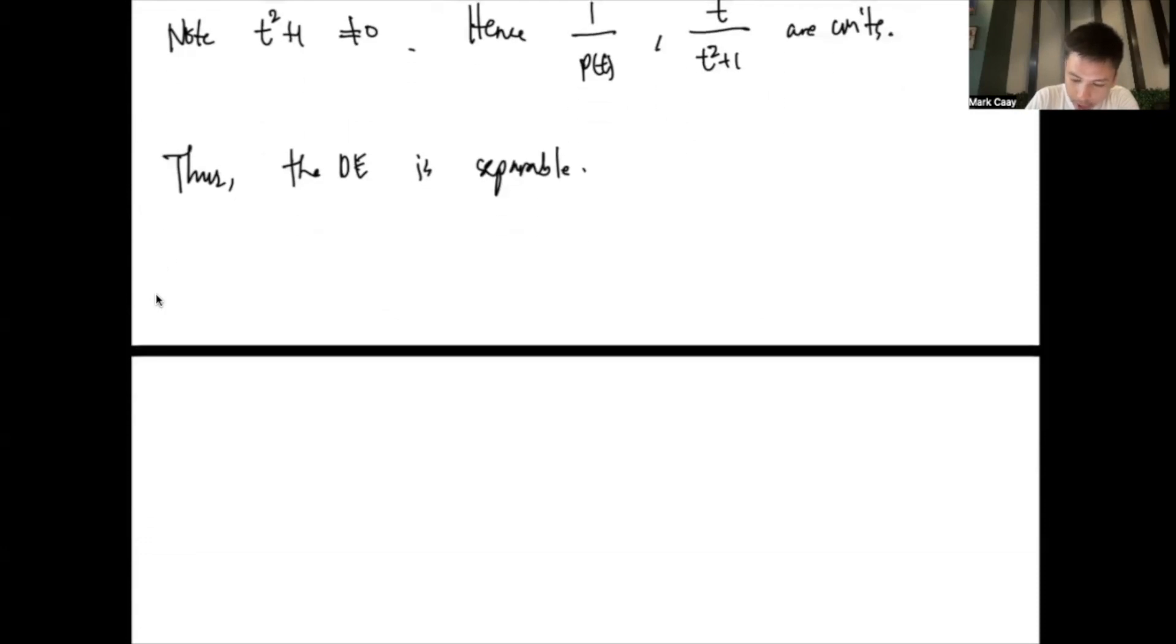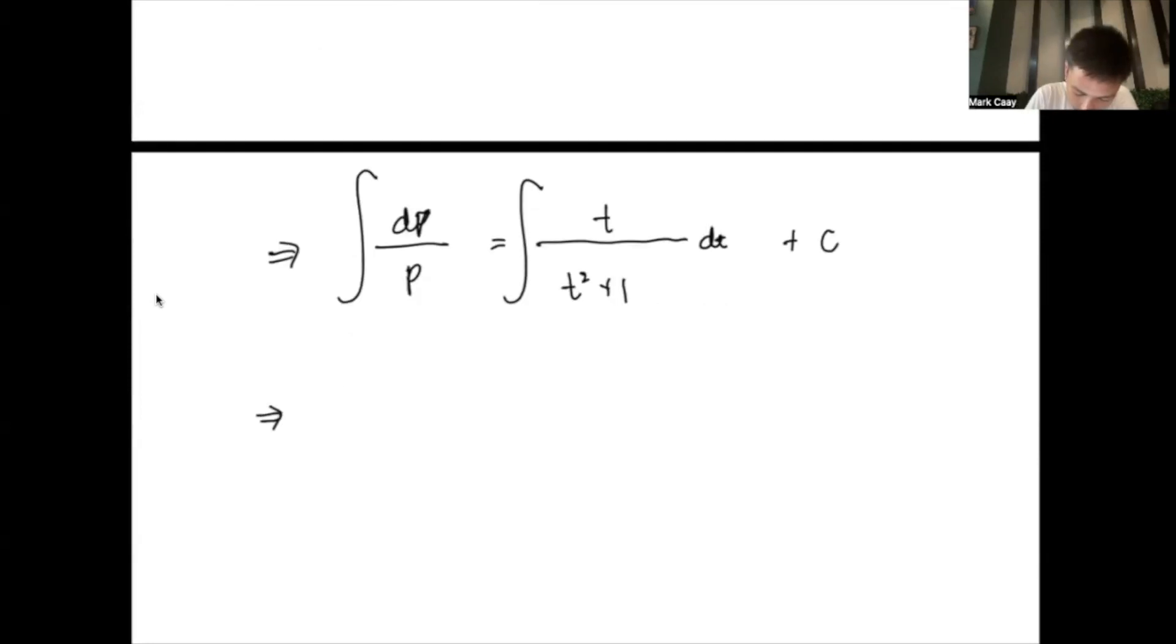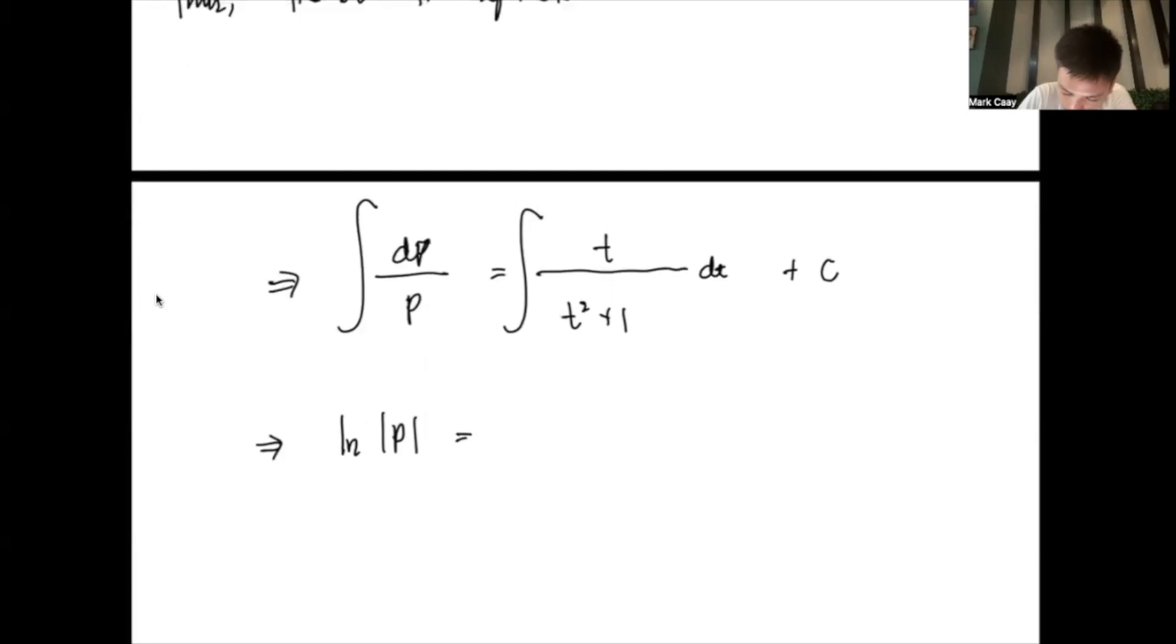And because this is separable, I can express that as this one: dp over p equals t dt over t squared plus 1. So, if I'm going to take the integration of both sides, I'm going to add c. This is equal to ln of p. And this one, we will have to do the substitution here. Remember, if you have the integral of t over t squared plus 1 dt, you can let u be equal to t squared plus 1. So, your du here is 2t dt, implying your t dt is equal to 1 half du. So, that's 1 half ln of t squared plus 1 plus c1.